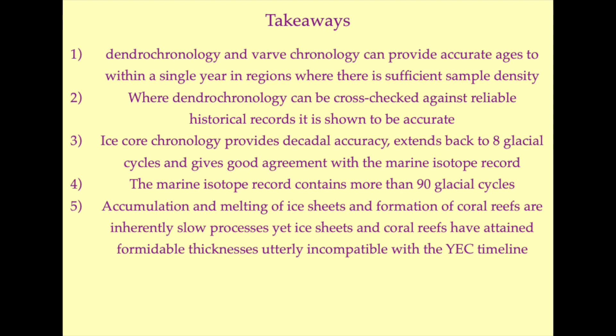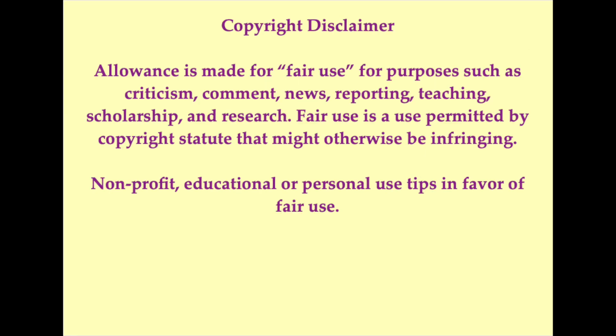The marine isotope record suggests there have been 90 glacial cycles recorded. 6,000 years is not sufficient time to accumulate one Laurentide ice sheet, let alone 90. Nor is it enough time to accumulate 12 meters of coral growth, nor enough time for Pando to have grown, or any of the other clonal organisms of which we're aware. The evidence available to us simply is not consistent with the conclusion that young Earth creationists have come to and refuse to be shaken from. Thank you so much for listening — please do join me next time when I will start discussing radiometric dating techniques.